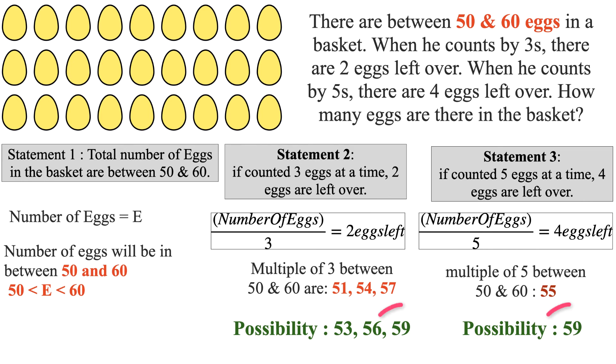So the common value for E based on Statement 2 and 3 is 59. Thus number of eggs in the basket is 59.